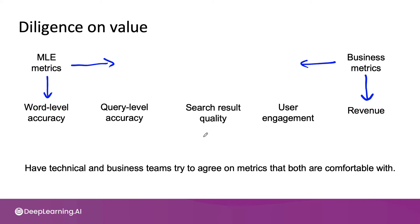I wish more problems could be solved by gradient descent or by optimizing test set accuracy, but that's just not the state of the world today. A lot of practical problems require we do more than just optimize test accuracy. So having the technical team and the business teams both step a little outside their comfort zone is often important — reaching a compromise on metrics that the technical team feels it can stretch to deliver on, and that the business team can accept as creating sufficient value.